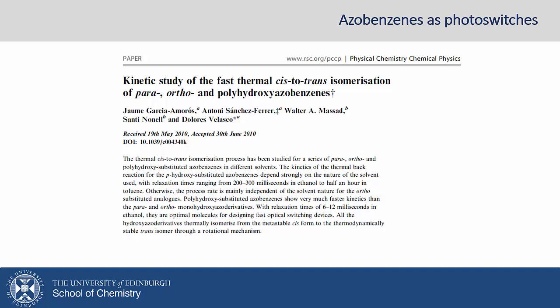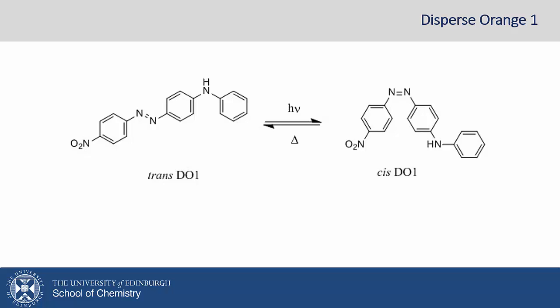The molecule we consider will be a particular azobenzene, disperse orange one, which has the structure shown. Note that the lab manual edition 2016-17 shows the structure of the disperse red one, but the same principle applies. Irradiation of the trans isomer forms some cis isomer, which then thermally reverts back to trans isomer over time. It is this back reaction that we will be studying.